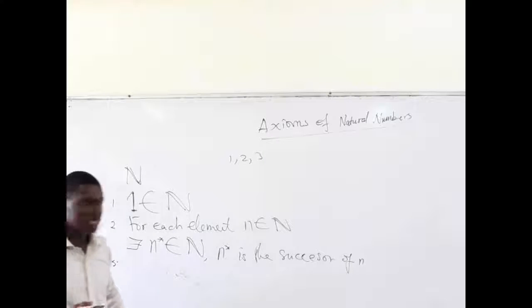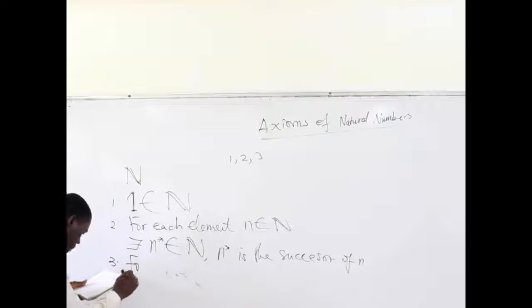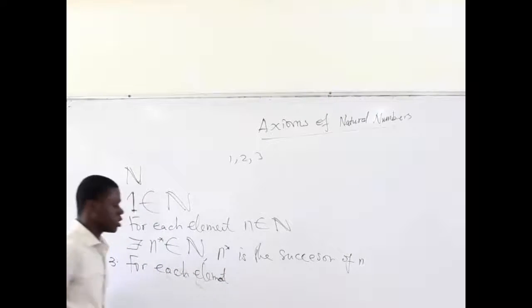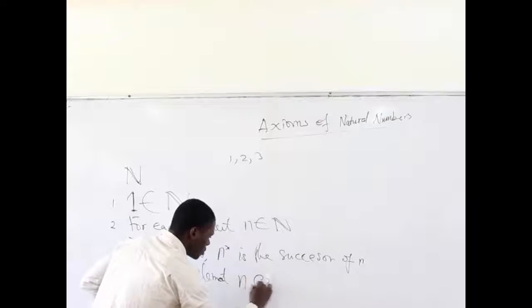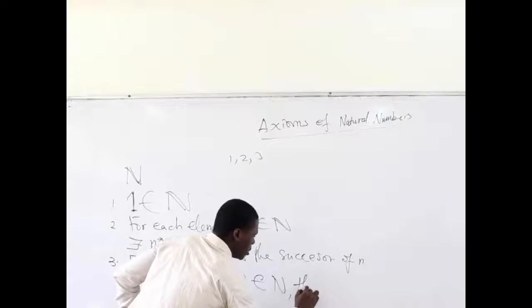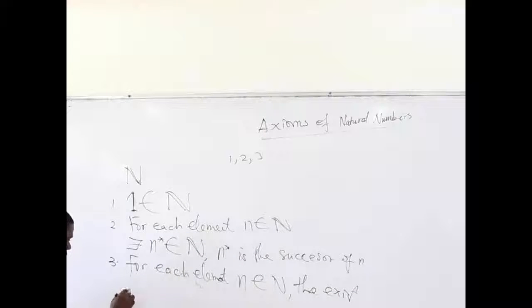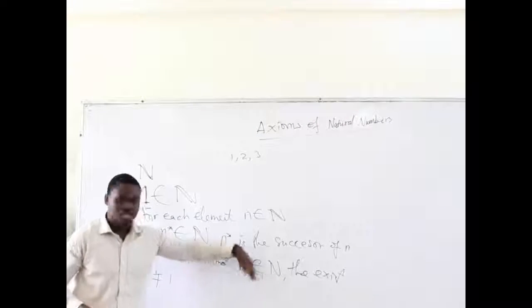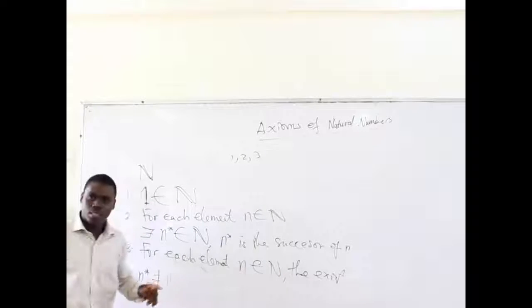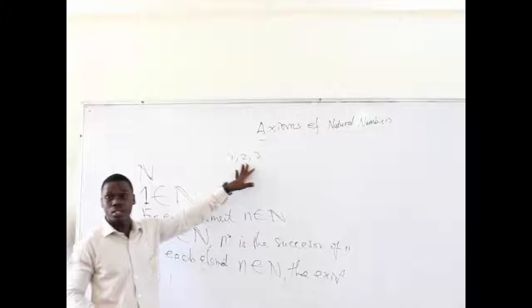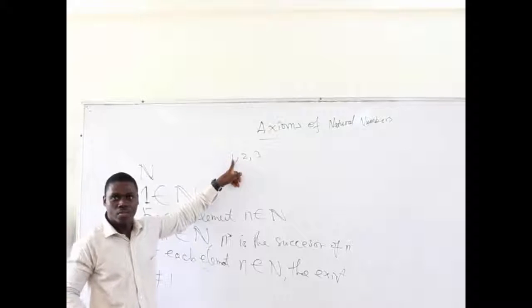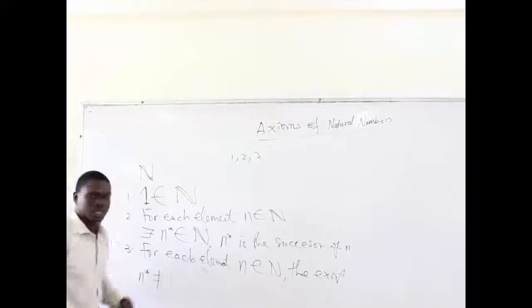The third axiom tells us that for each element N which belongs to the set of natural numbers, there exists N* which is not equal to one. This means that for every element that belongs to the set of natural numbers, its successor cannot be one. This is clear because when we look at the set of natural numbers, it begins from one, and we move from one, two, three. One cannot be a successor of any number because we are starting from one, so one can't be a successor.